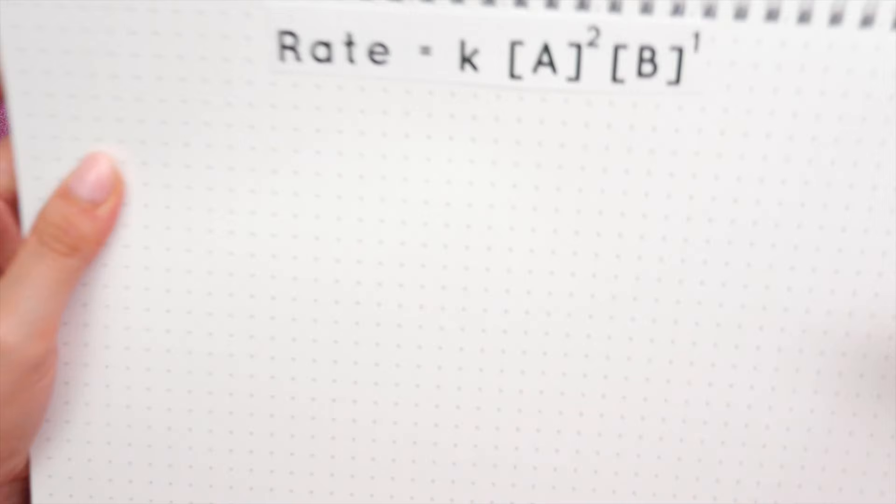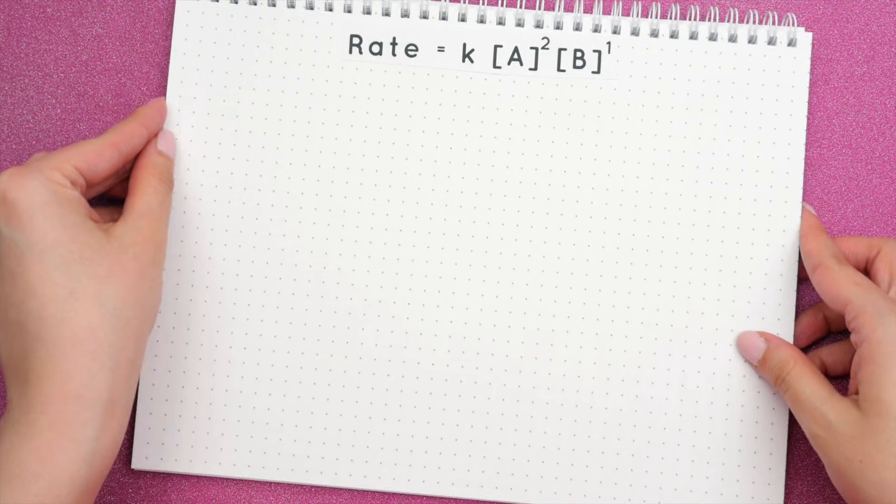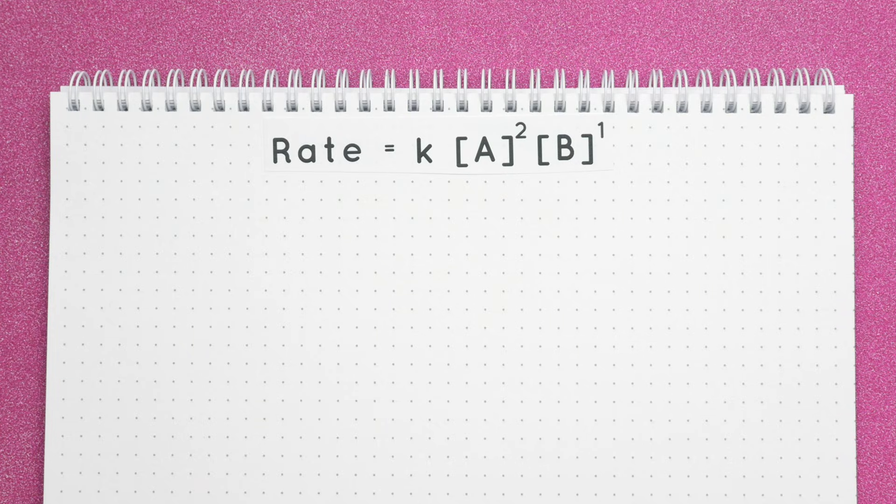Now since we know x equals 2 and y is equal to 1, this is our rate law. But we still have to find k.